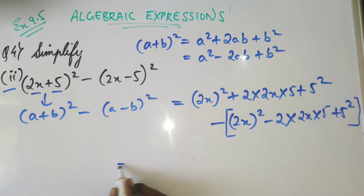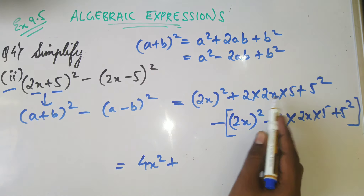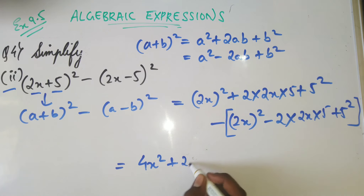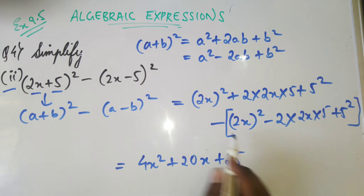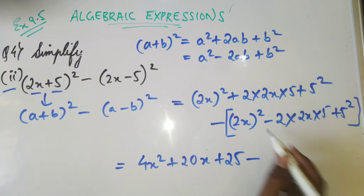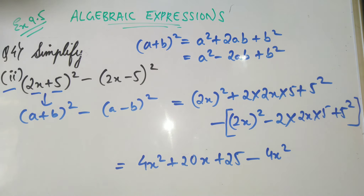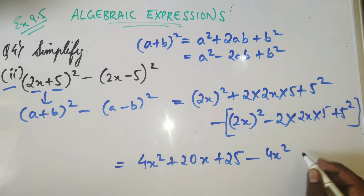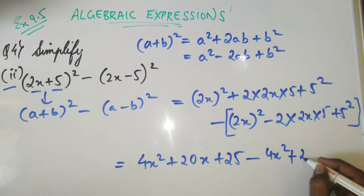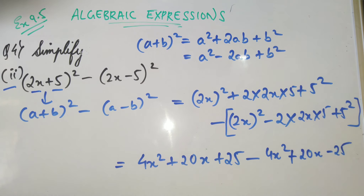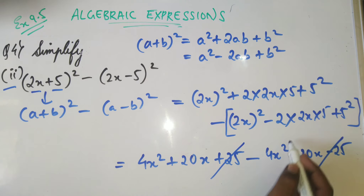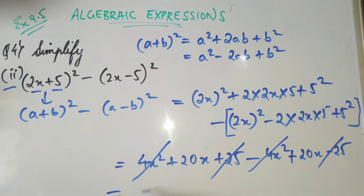Opening the bracket: (2x)² = 4x², plus 2·2x·5 = 20x, plus 25. Then minus 4x², plus 20x, minus 25. The 4x² terms cancel and the 25 terms cancel. So the final answer is 20x + 20x = 40x.